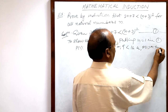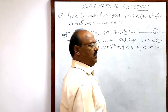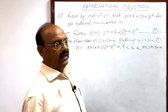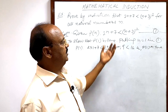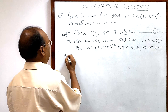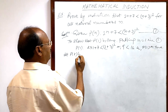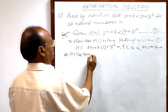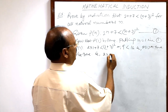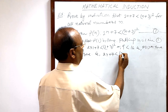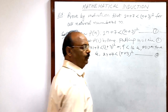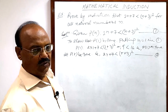For the second step, we assume that P(r) is true, meaning the statement is true for n=r. So let P(r) be true: that is, 2r + 7 is smaller than (r+3)². We call this relation number 2.